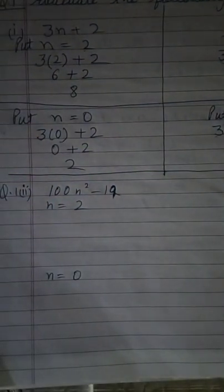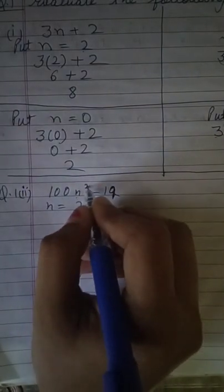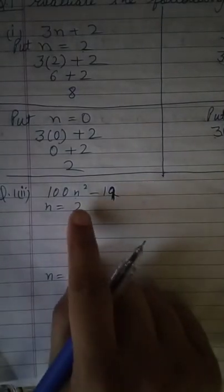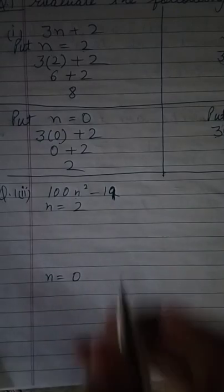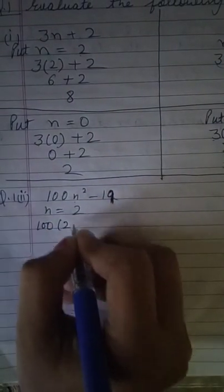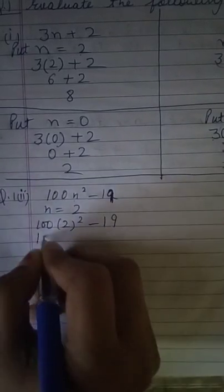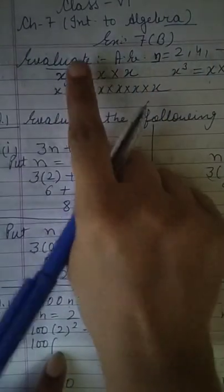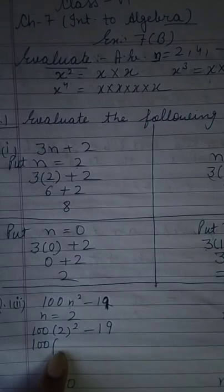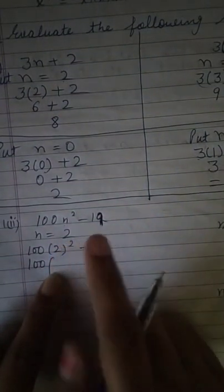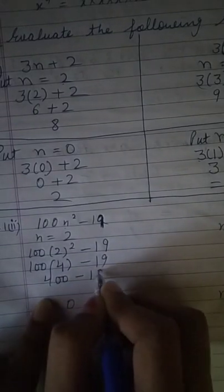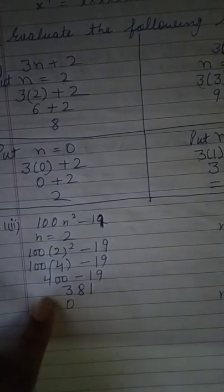Next I have taken one more part for you: 100n² minus 19. Firstly we take n equal to 2. Let us replace n with 2. 2 to the power 2. I told you what power 2 means - you multiply it 2 times. So 2 multiply 2 equals 4. 4 times 100 minus 19, I am getting 381.